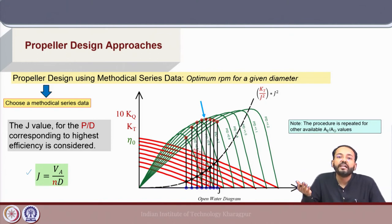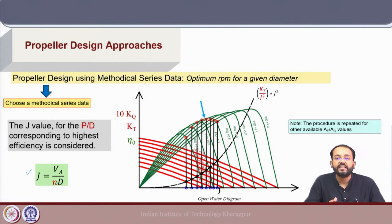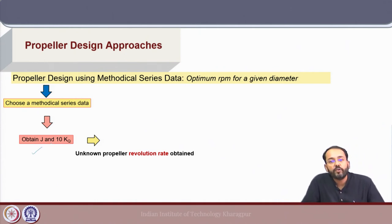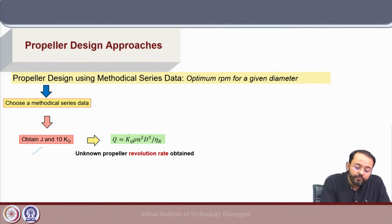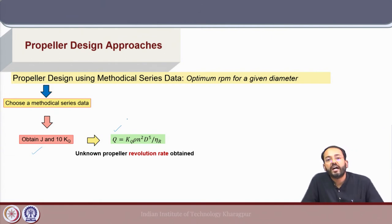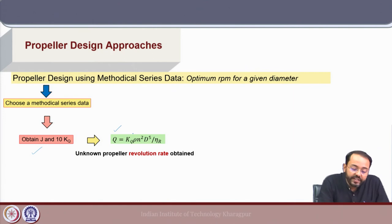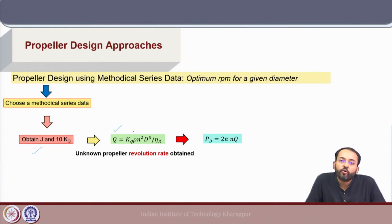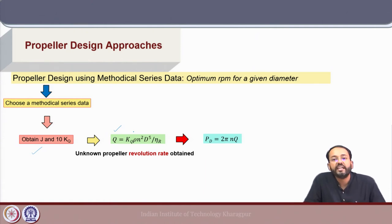This procedure can be repeated for other available blade area ratio values, since each Ae/A0 gives a different set of open water diagrams for varying P/D ratio. From the methodical series data we get the J value, and from J we can get the corresponding 10Kq value, from which we calculate the propeller torque and the unknown revolution rate. Using the open water torque coefficient and relative rotative efficiency ηr, we can calculate the torque and finally the delivered power.